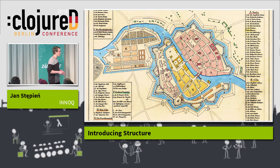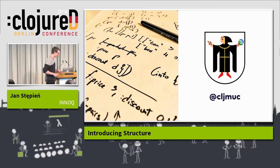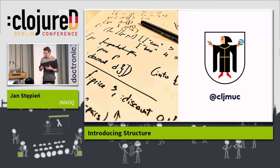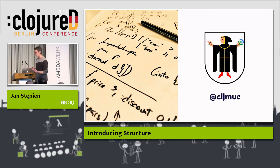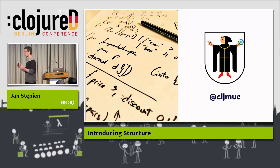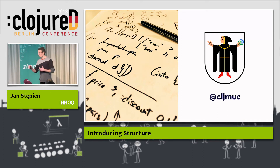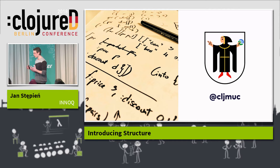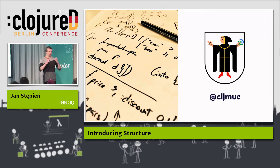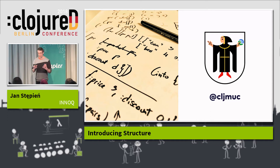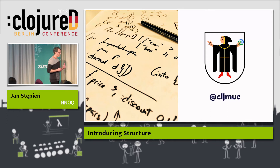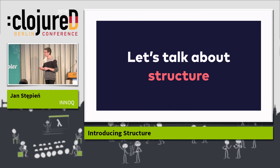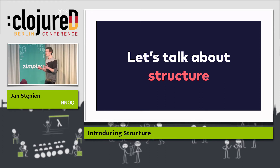Before I moved to Berlin, I lived in Munich for a couple of years, where I was organizing the Clojure Munich meetup. One of the questions which kept returning during our meetups was: after I learned the basics of the language and started playing around with some libraries, how do I build an entire living thing, a whole application? How do I connect all the pieces? This talk is an attempt at answering this question — at building an entire structure of a whole application.